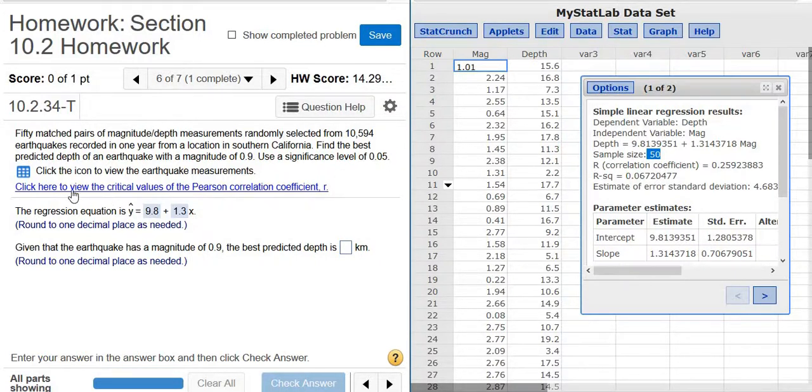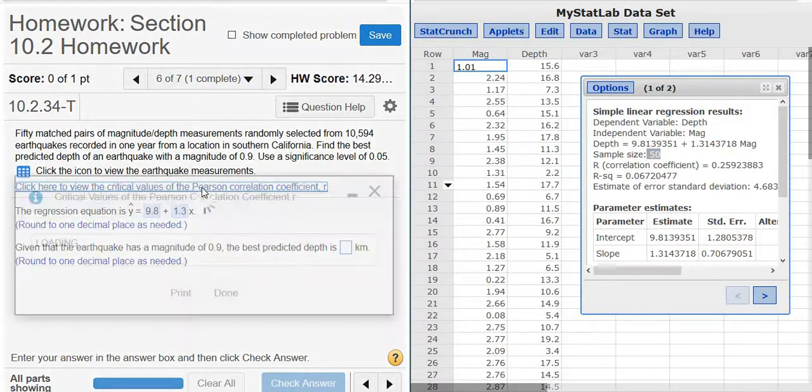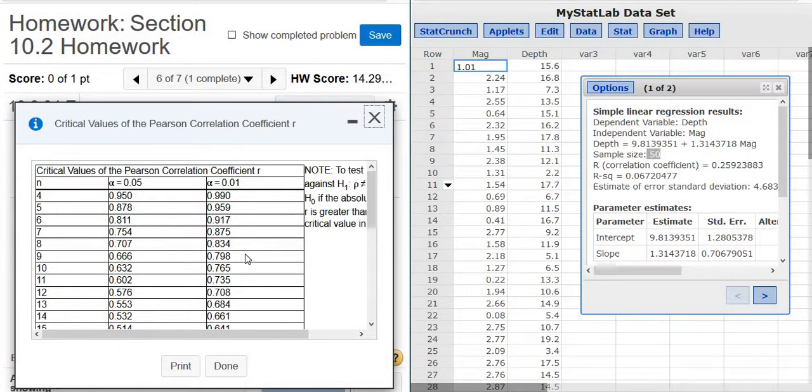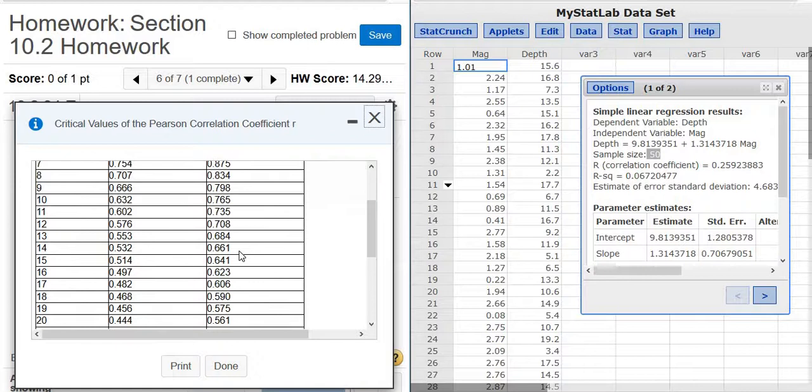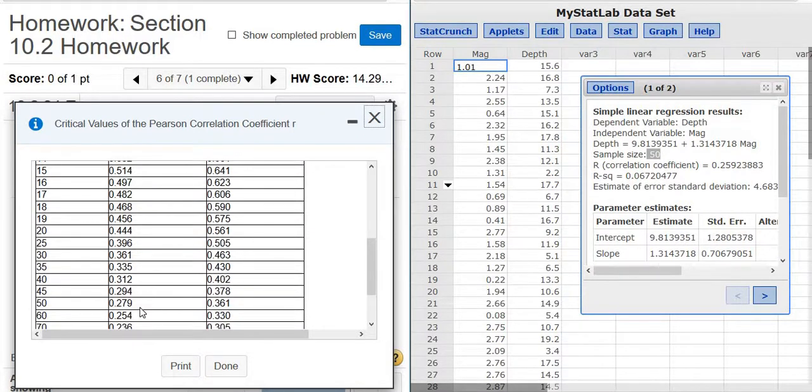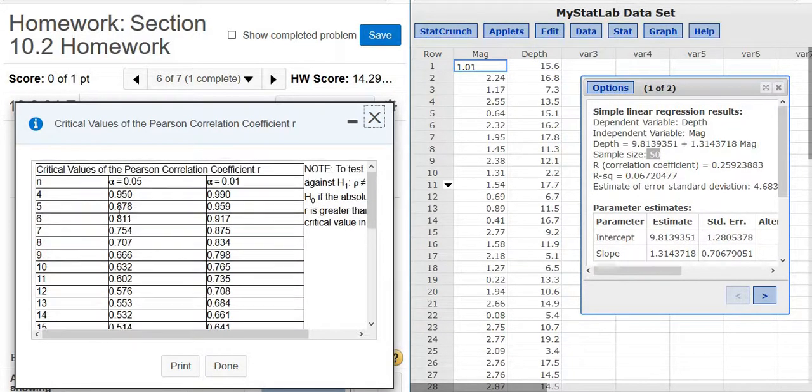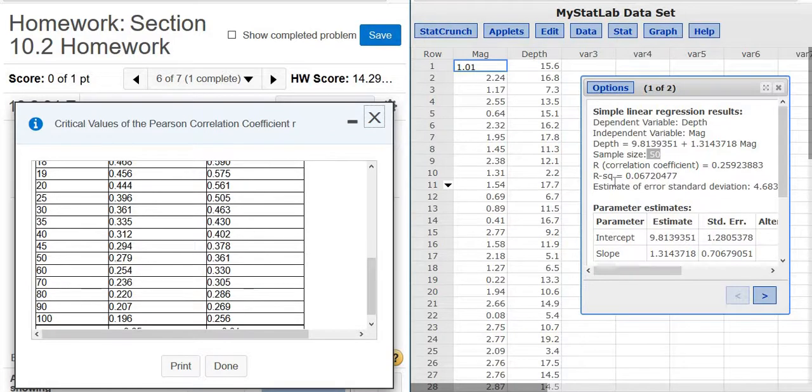So I'm going to click this, click here to see the critical values. Okay, you always have to do this even though it doesn't ask you, because the next part will depend, how you do the next part depends on this. So alpha is 0.05, n is 50. So r is 0.259, the critical value is 0.279, so r is smaller, so r is not significant.